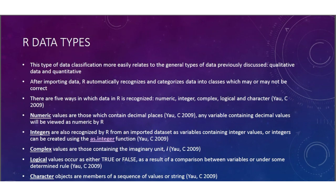R data types: this type of data classification more easily relates to the general types of data previously discussed—qualitative data and quantitative data. After importing data, R automatically recognizes and categorizes data into classes which may or may not be correct. There are five ways in which data in R is recognized: numeric, integer, complex, logical, and character.